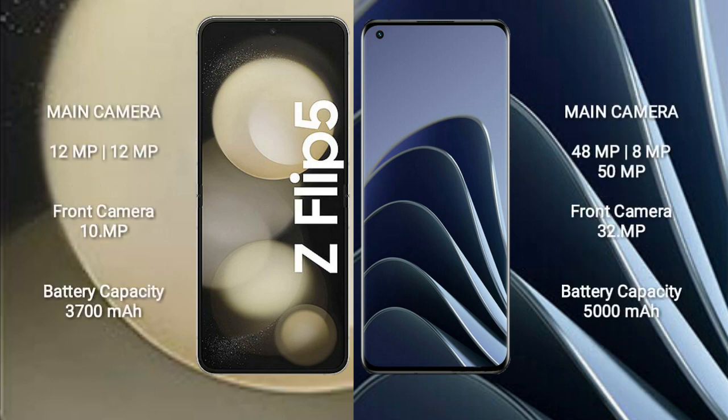Samsung Galaxy Z Flip 5 features a dual rear camera setup: 12 megapixel plus 12 megapixel, and a 10 megapixel front camera. OnePlus 10 Pro features a triple rear camera setup: 48 megapixel plus 8 megapixel plus 50 megapixel, and a 32 megapixel front camera.